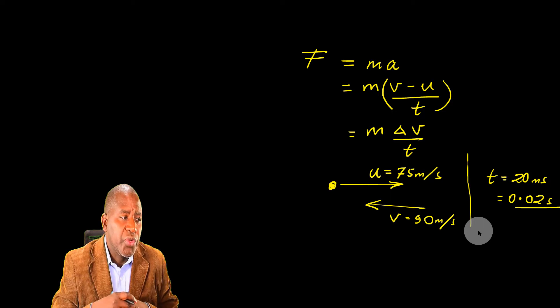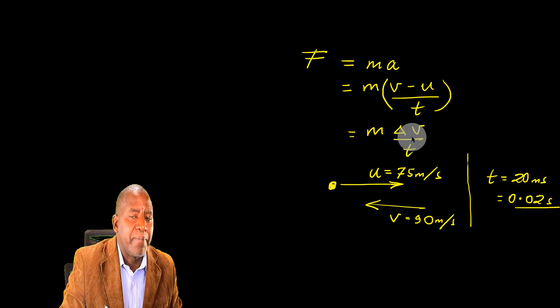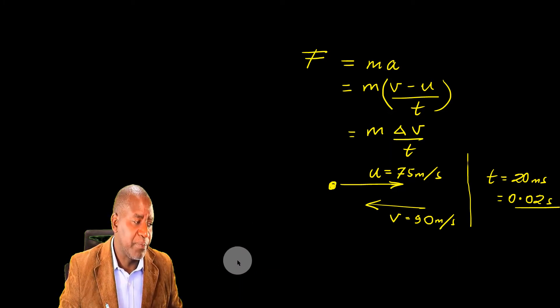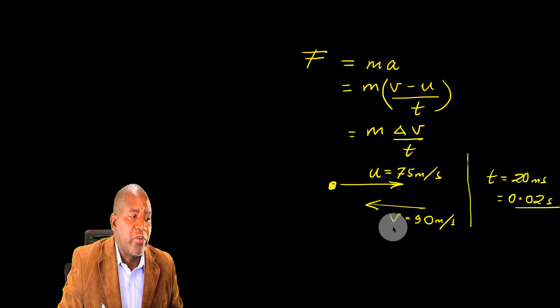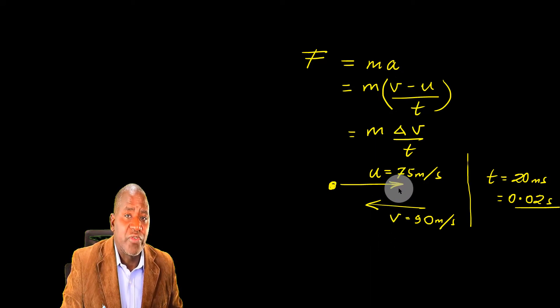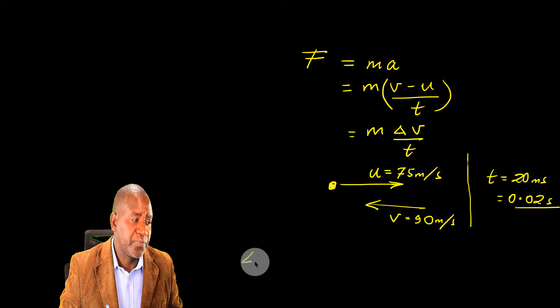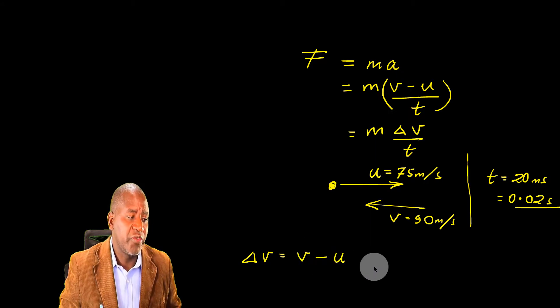At this point, using U and V, I'm able to find the change in velocity, because that is what I require here. For me to get change in velocity, which is this one here, I've got to do final velocity minus the initial velocity. So change in velocity equals final velocity minus initial velocity.